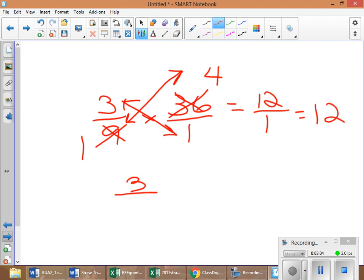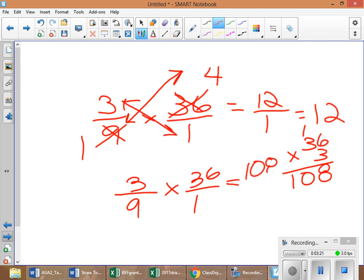So, I'm going to draw it again. 3 over 9 times 36 over 1. So, what you'd have to do is you'd have to do 36 times 3. 36 times 3, you have 108. And 9 times 1 is 9. 108 divided by 9 equals, you guessed it, 12. Same thing. So, just by doing a little bit of reducing inside of the fraction, I can get my number a lot easier. I don't have to reduce. Let's try it again.